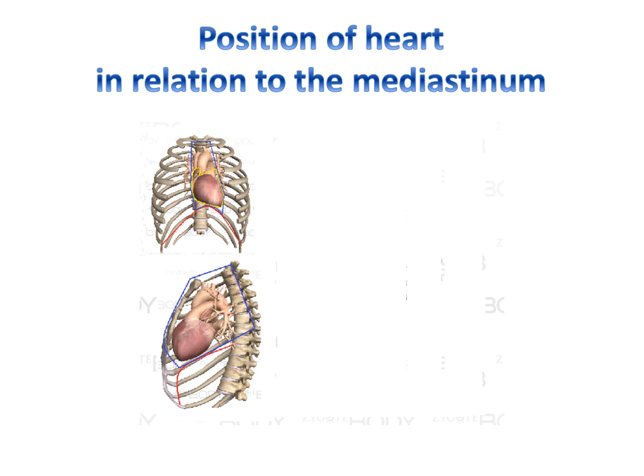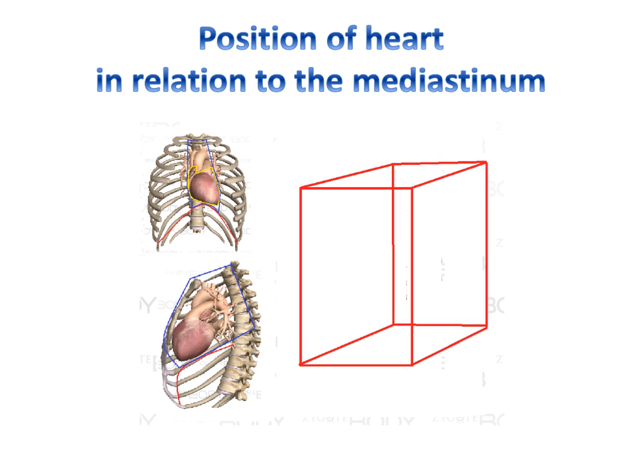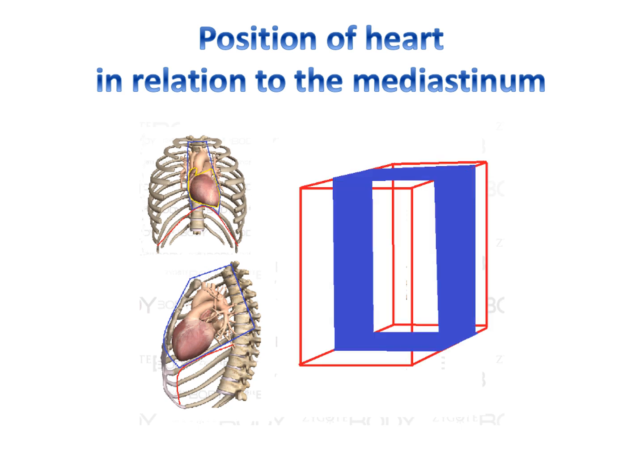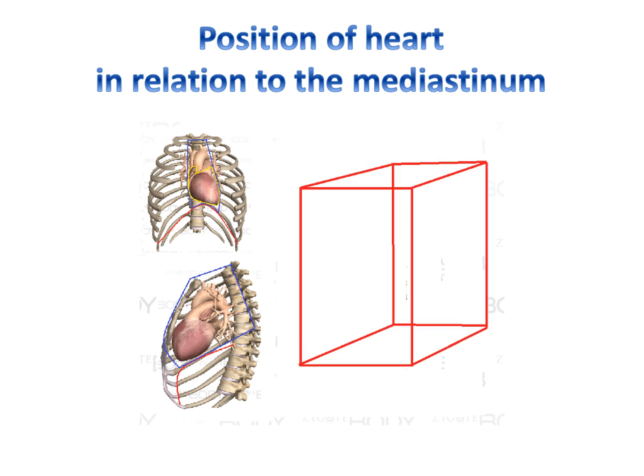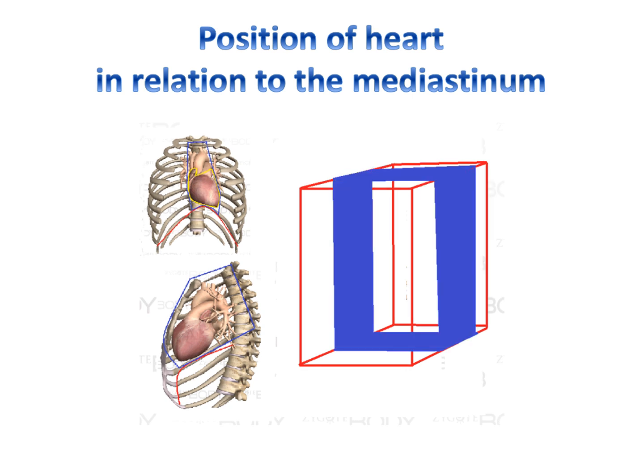Imagine that the red rectangular cube is our thoracic cavity. The blue colored region represents the central compartment as the mediastinum.